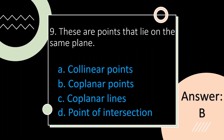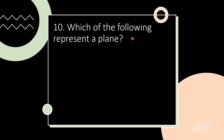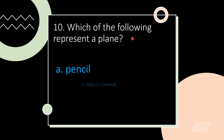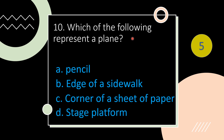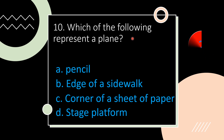Next: which of the following represents a plane — pencil, edge of a sidewalk, corner of a sheet of paper, or stage platform? The answer is letter D, stage platform. Pencil, edge of a sidewalk, and corner of a sheet of paper all represent a line.